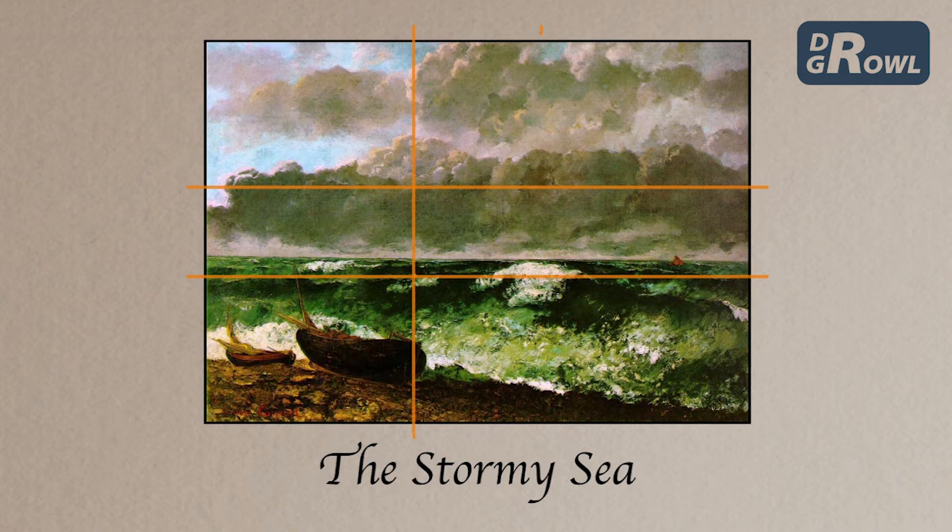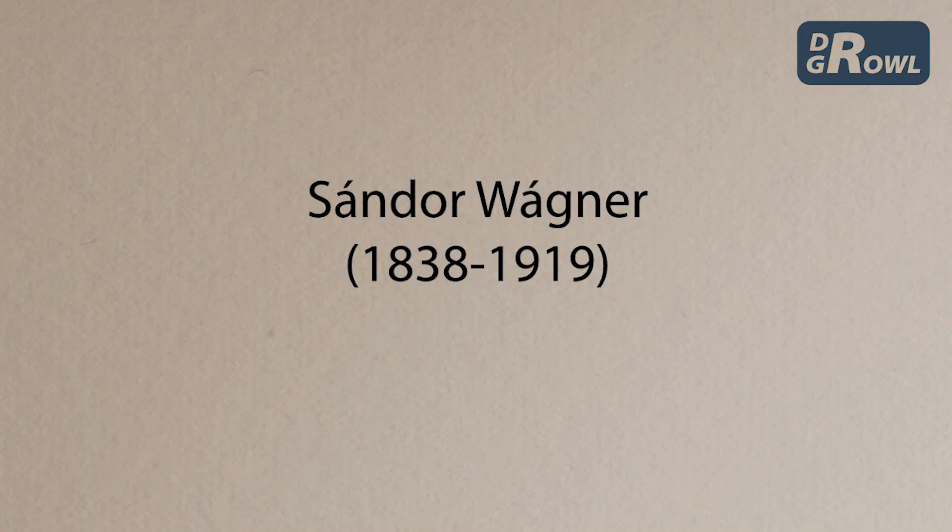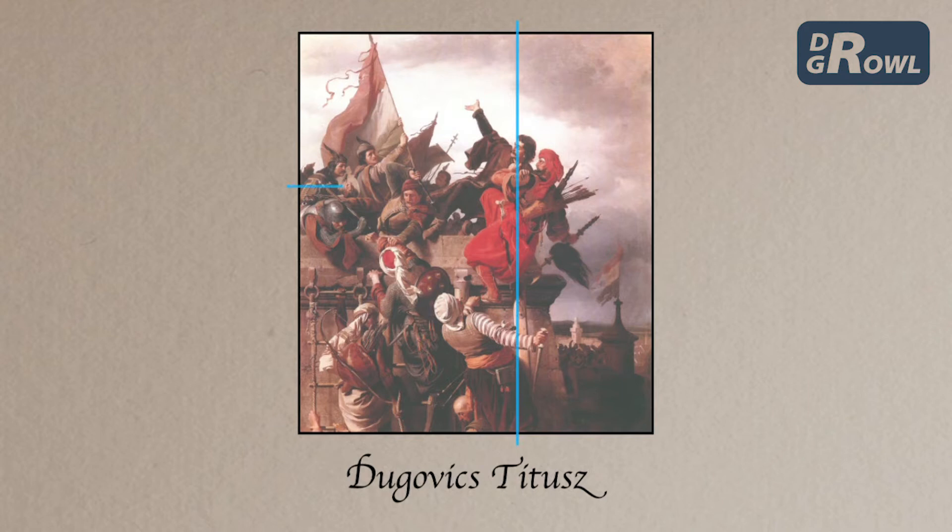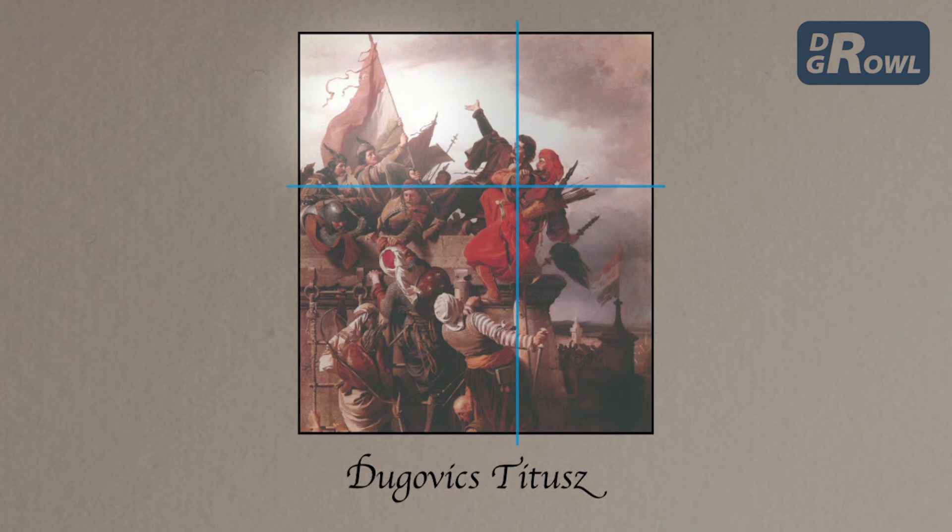In his painting The Stormy Sea, he lifted the horizon in respect of the golden proportions from the lower trisection, thus emphasizing the smashing force of this immense mass of water.